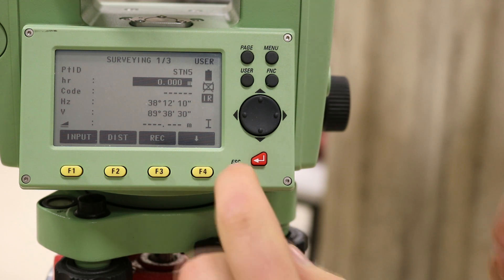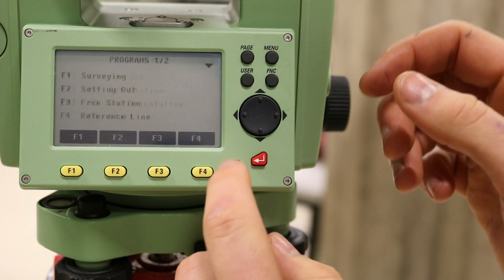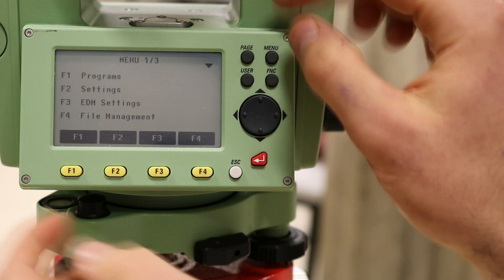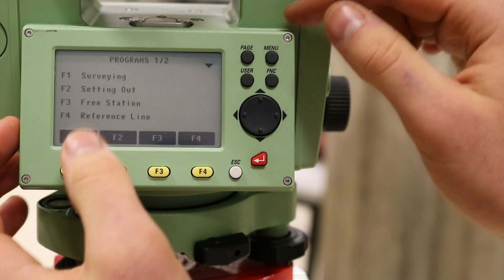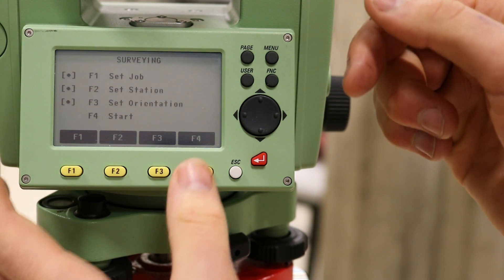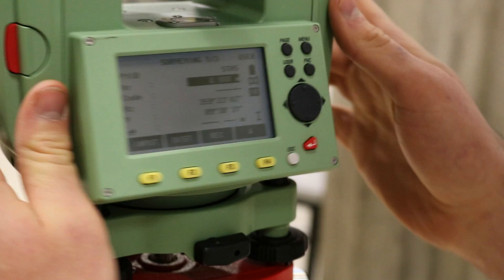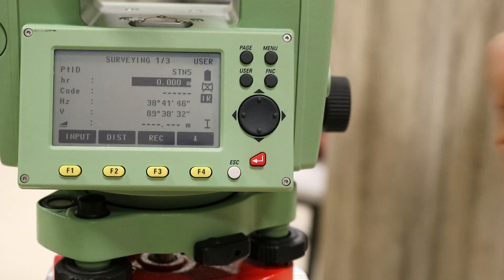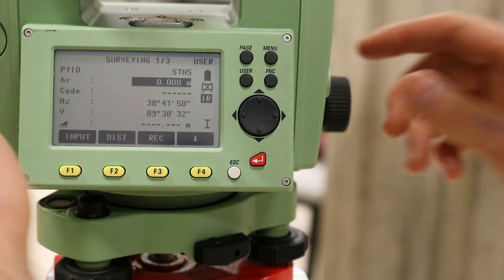To survey, again make sure that the total station is set up, level, and orientated. Enter the surveying mode from the program menu and enter a point ID that you wish to survey. If you are surveying with a prism, it is important to remember to enter the prism height into the HR section that would be displayed on screen.